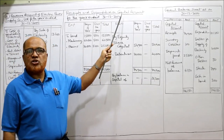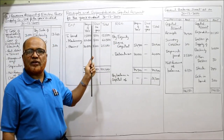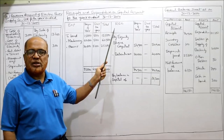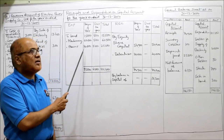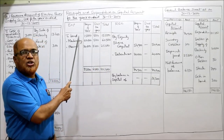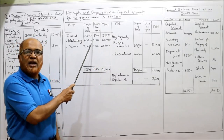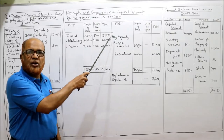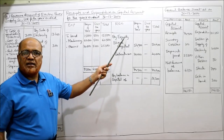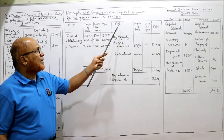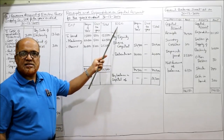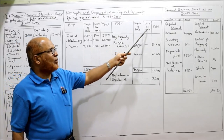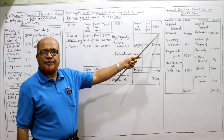Now we come to the capital account: receipts and expenditure on capital account for the year 31st December 2000. Debit side shows expenditure — beginning of the year, during the year, and total. The credit/receipts side similarly shows receipts at beginning of the year, during the year, and total.